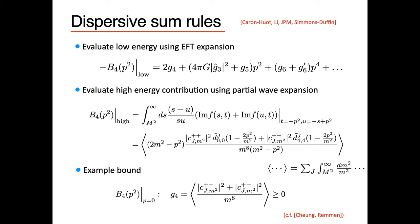There are famous bounds from the forward limit that people have studied for many years. If we take the forward limit in the sum rule, only G4 survives and all the Wigner functions go to one, and one proves that the G4 coefficient is positive. This is what people had done in the past using dispersion relations, but it doesn't answer the question of how big Wilson coefficients can be.